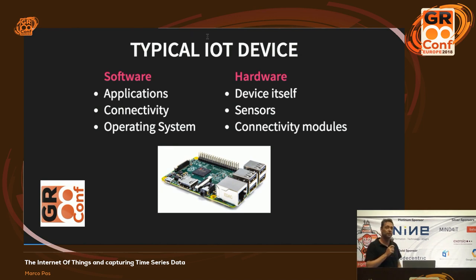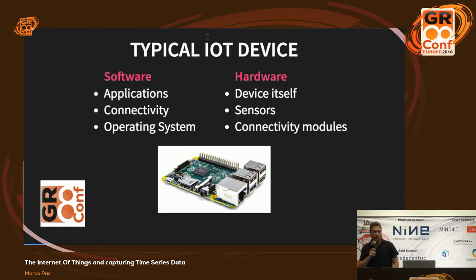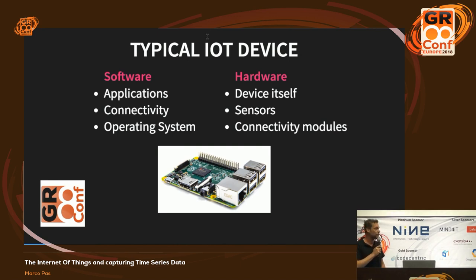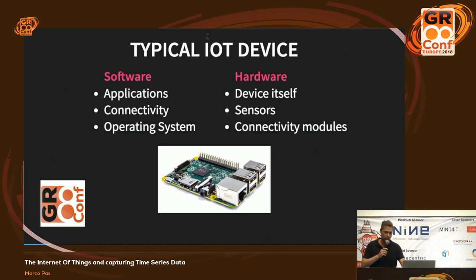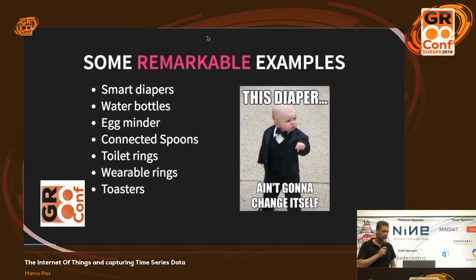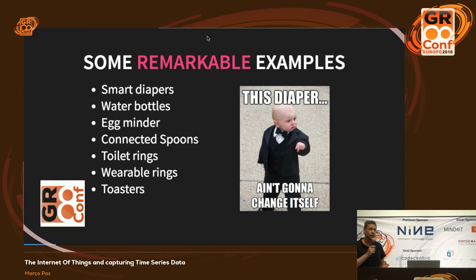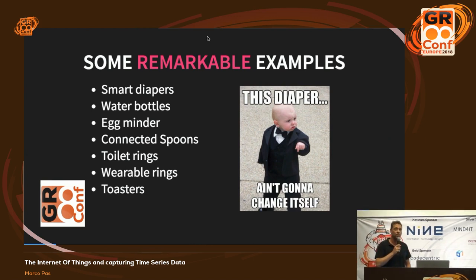When people speak about IoT devices, many only think about the famous Raspberry Pi. But an IoT device is not equal to a Raspberry Pi. An Internet of Things device consists of two different areas: physically the hardware - which can be small or big, though we tend to focus on small devices - and the applications and operating systems running on top of that device, plus the connectivity, because that's an important one.